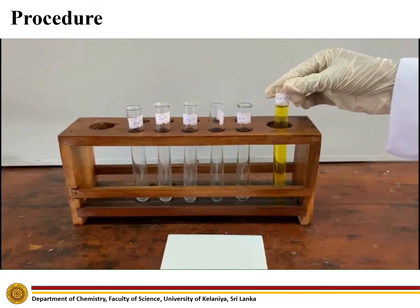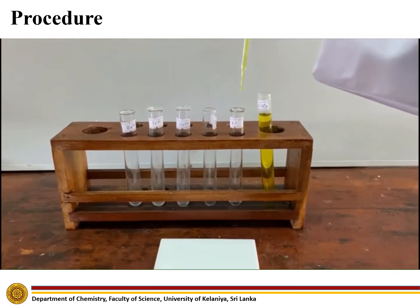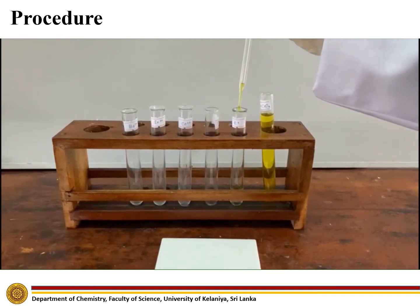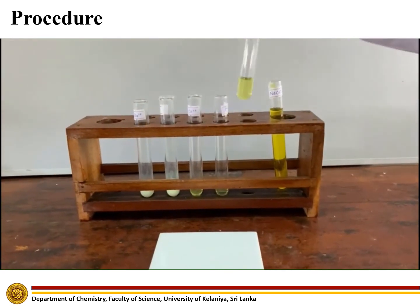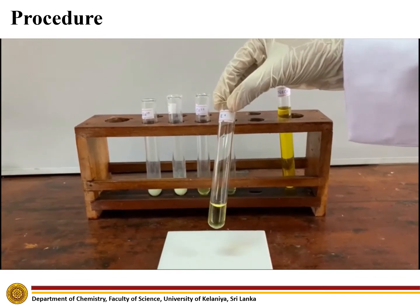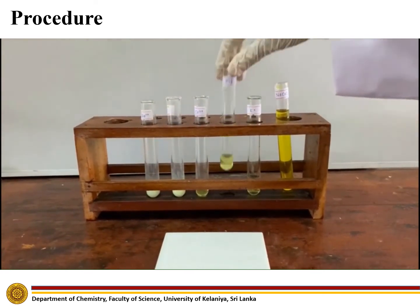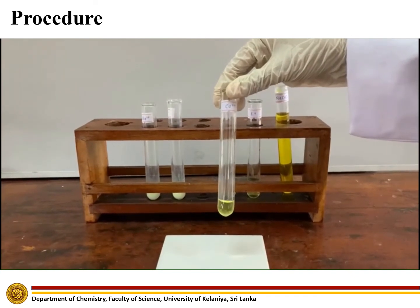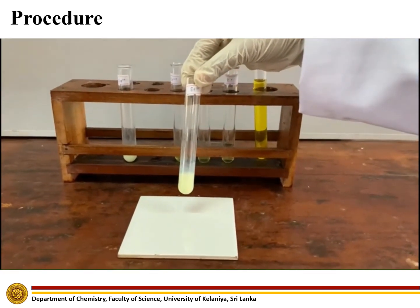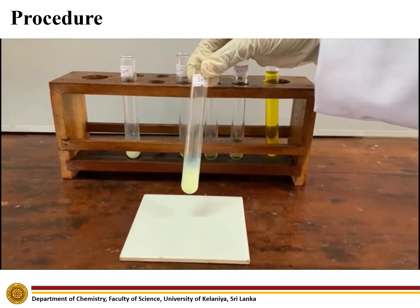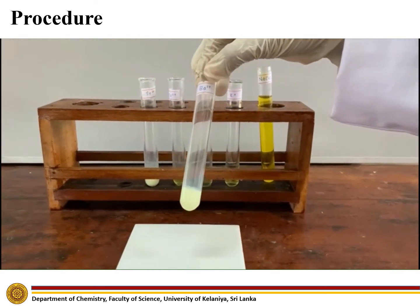Add sodium chromate to the given cation solutions. It dissolves well in potassium ion solution, magnesium ion solution, and calcium ion solution. A pale yellow precipitate forms in strontium ion solution, and a yellow precipitate forms in barium ion solution.